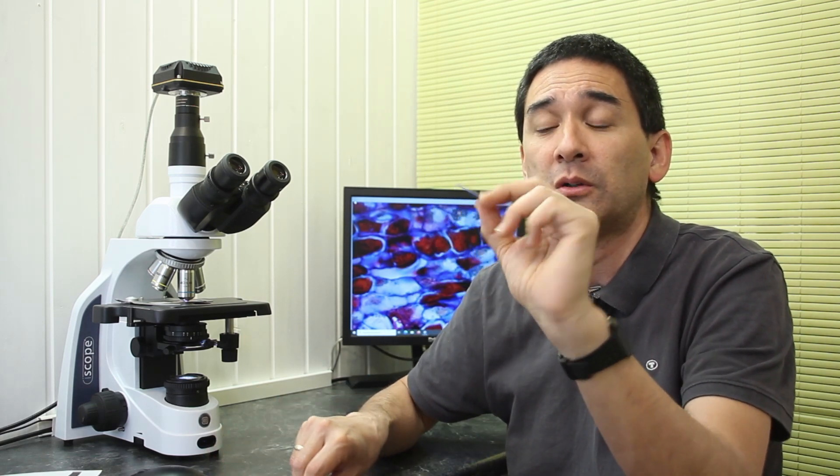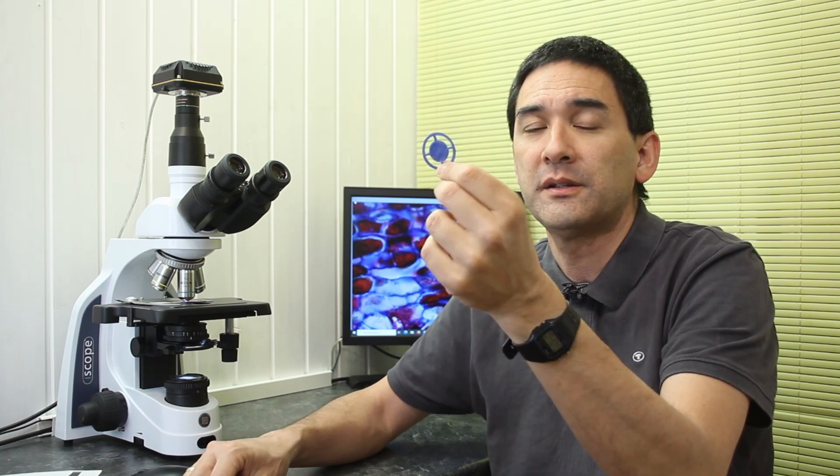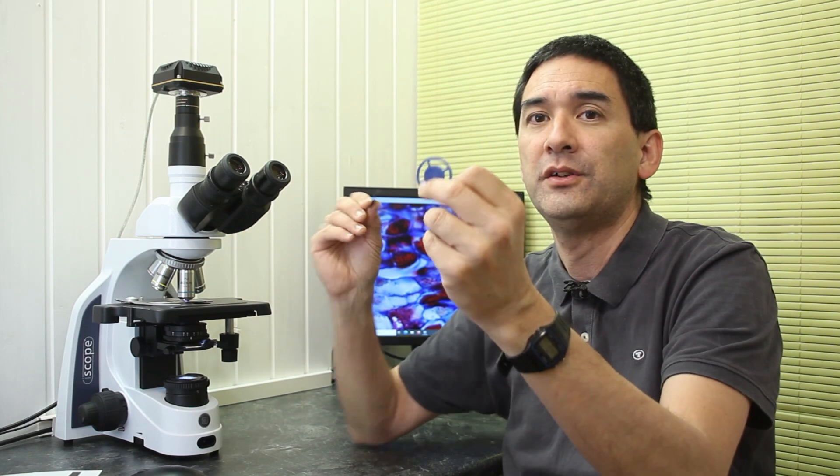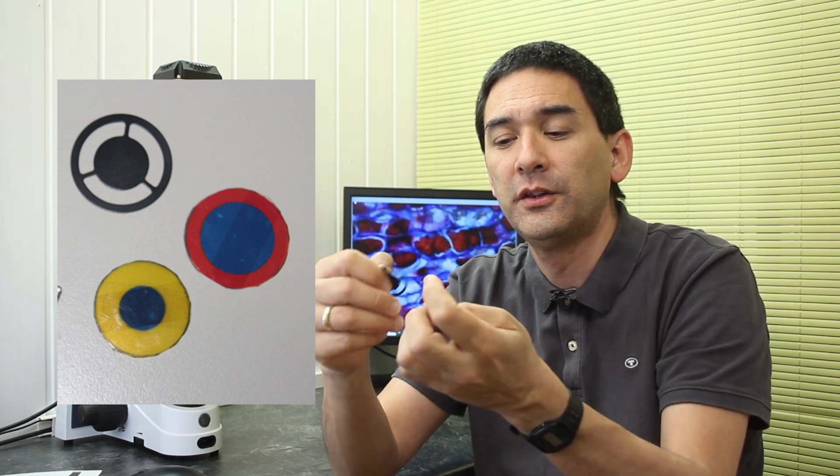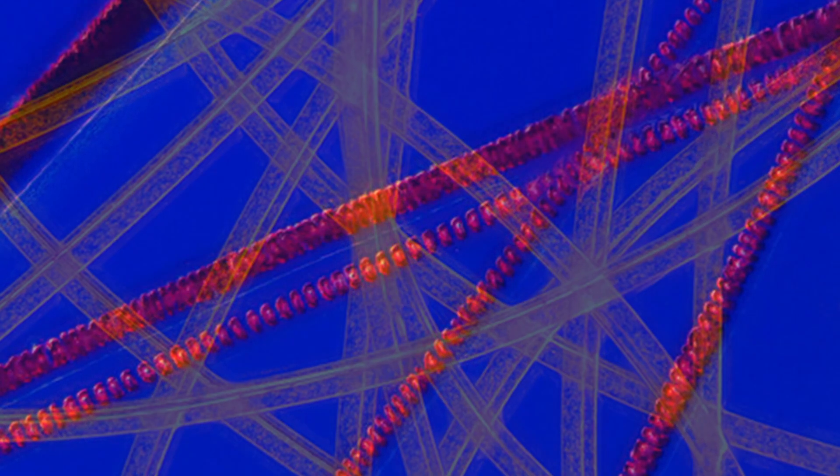However, what happens if you want to look at a live specimen and you cannot stain it because that would kill it, and the natural colors are simply too weak? In this case there is in microscopy a possibility called optical staining. In optical staining you're artificially introducing colors and contrast to the image without the addition of chemicals. One way would be to use filters. This is a so-called patch stop filter. There are different kinds; this one I 3D printed myself, but you can also make them using cardboard and markers.